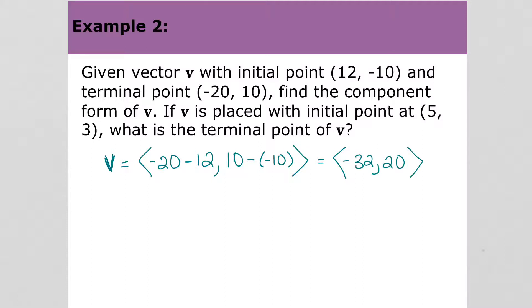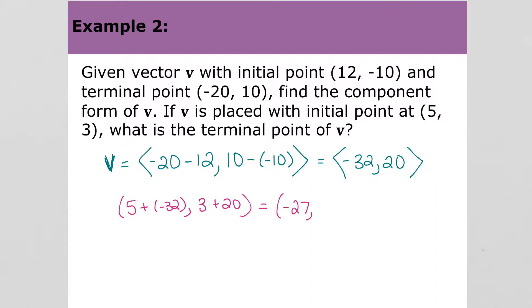Then it says: if v is placed with an initial point at (5, 3), then what is the terminal point? So basically, we're picking up the vector and moving it to an initial point at (5, 3). So if we take the point (5, 3) and add to it our vector, that will give us the new terminal point. So 5 plus negative 32, and 3 plus 20 – our new terminal point is negative 27, 23.